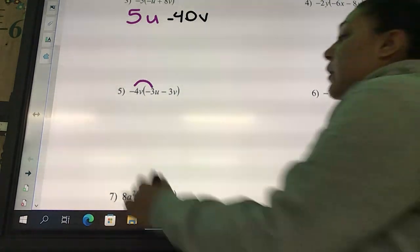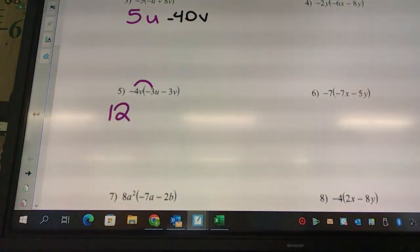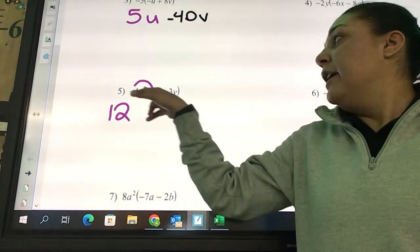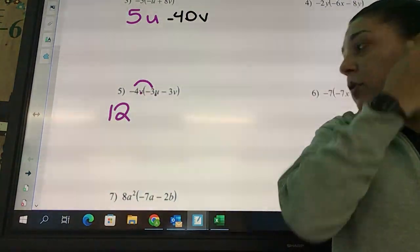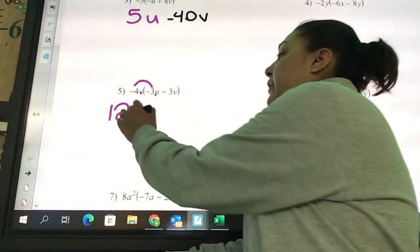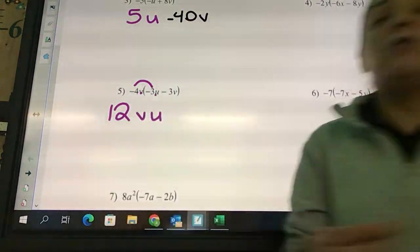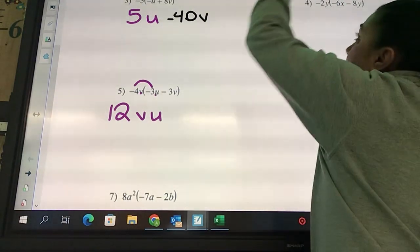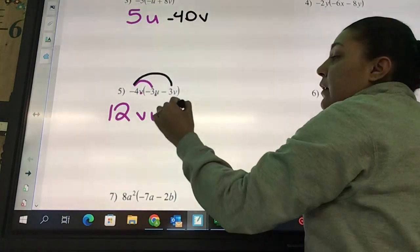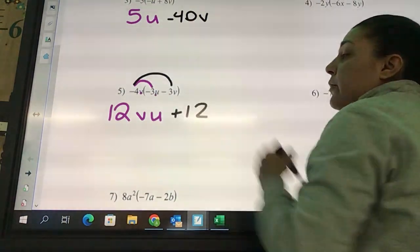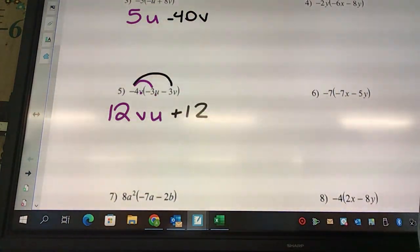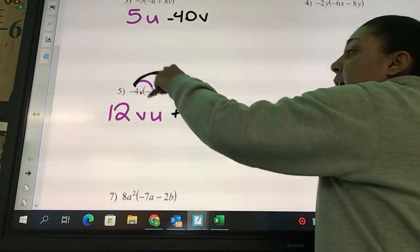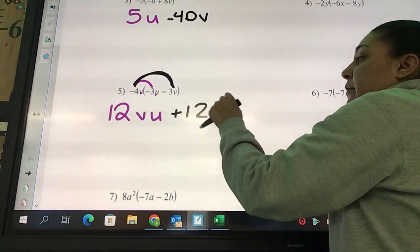Twelve. Now this guy has a v and a u, so it's going to look like vu. You cannot combine those two because they're two different things. The second part: negative four times negative three is positive 12. How many v's do I have? Two, so it's v².